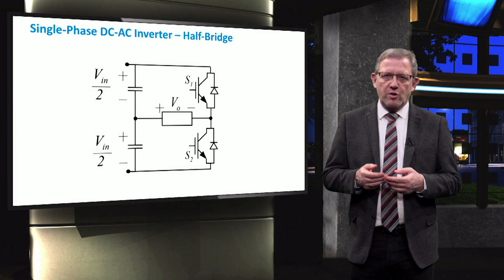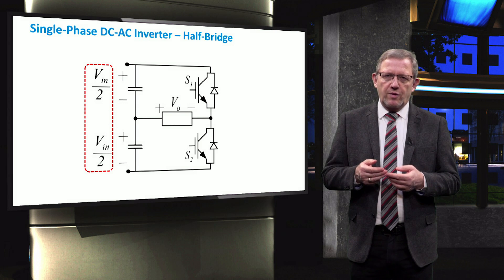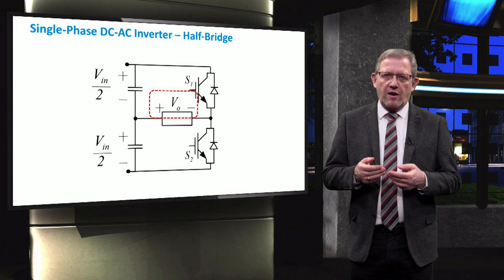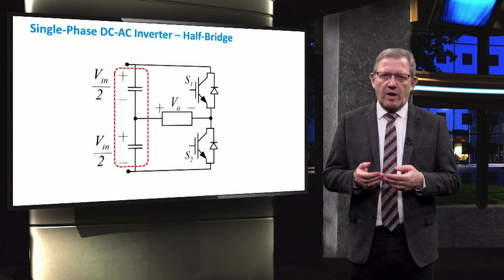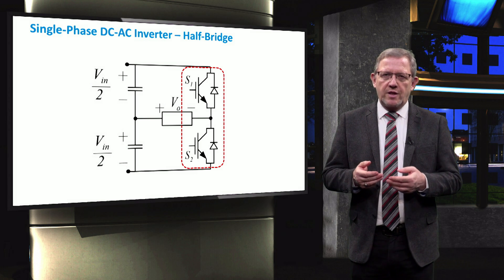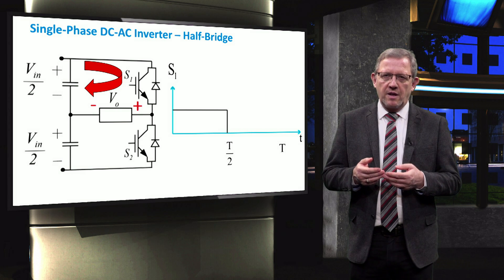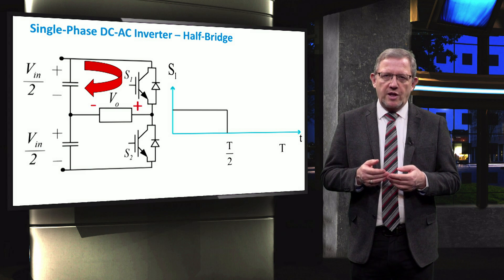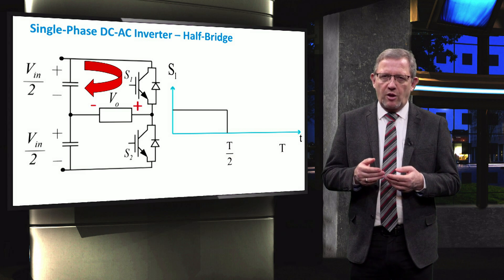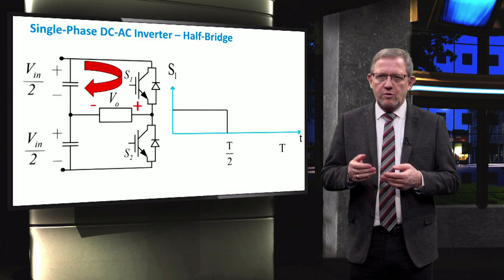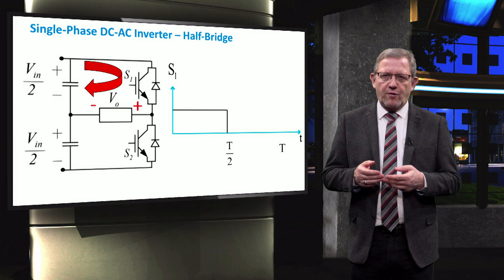After presenting the two AC-to-DC topologies, let's look at DC-to-AC inversion. One of the simplest devices to invert the input DC voltage Vin to a single-phase AC output voltage Vout is the so-called half-bridge. The half-bridge consists of two capacitors in one leg on the left-hand side and two switches in another leg on the right-hand side. When switch S1 is on, the positive value of half the input voltage appears across the load. While S1 is on during the first half period from 0 to T/2, the current flows through the switch to the load.